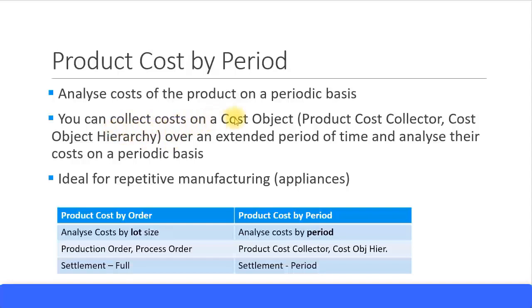You can collect the costs on a cost object for product cost by period over an extended period of time and analyze the costs on a periodic basis. For each period you're looking at what is the cost of this product. This is ideal for a repetitive manufacturing environment where you keep manufacturing the same thing without much changes — periodically for many years — and every period you can analyze what is the cost to make this product. For example, you can use this in the appliances industry.